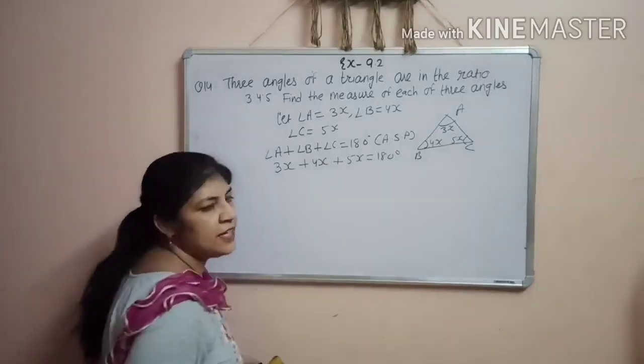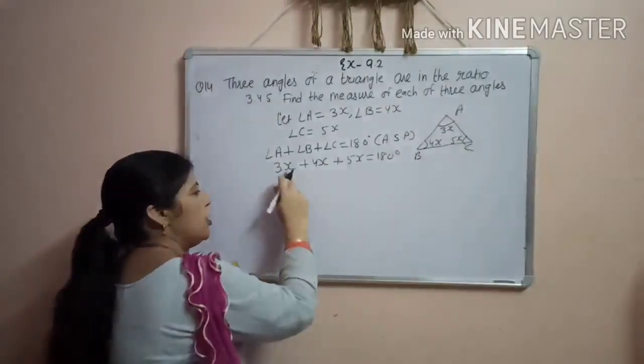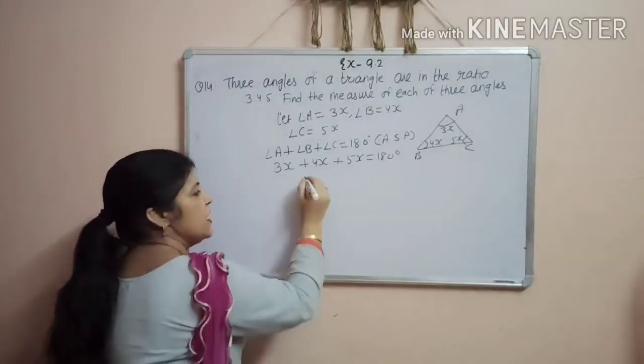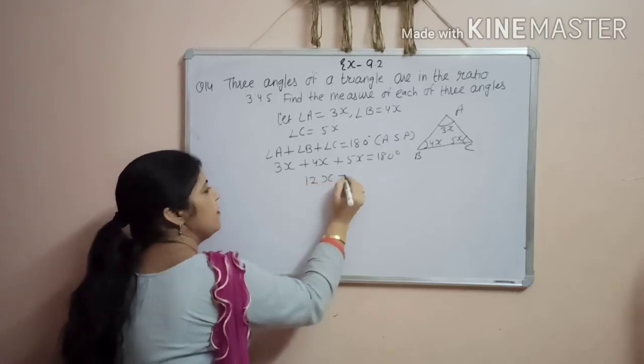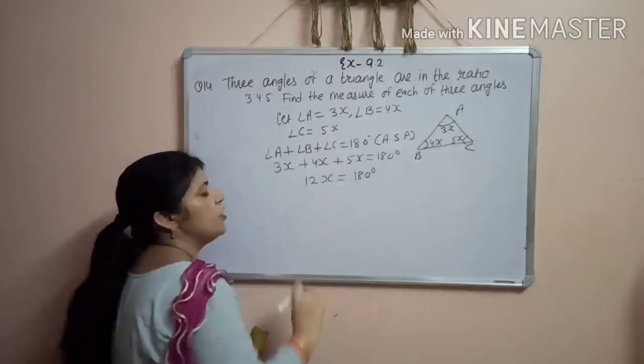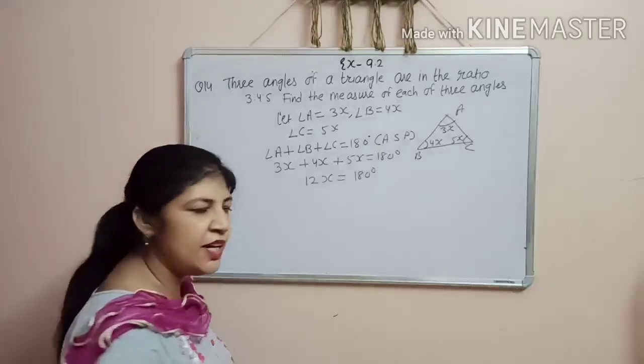Now, these are all like terms, you can add them. 3 plus 4 is 7, 7 plus 5 is 12x. 12x is equal to 180 degree.